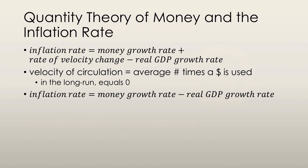A couple of important mathematical items that we need to cover. First, I'm going to define velocity of circulation. Velocity of circulation is the average number of times that a dollar of money is used annually to buy the goods and services that make up GDP.